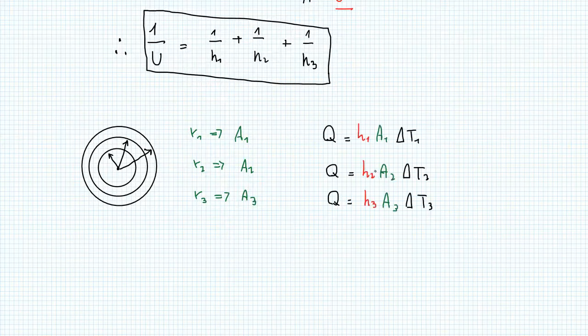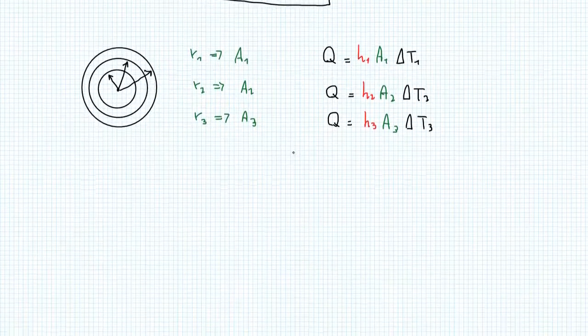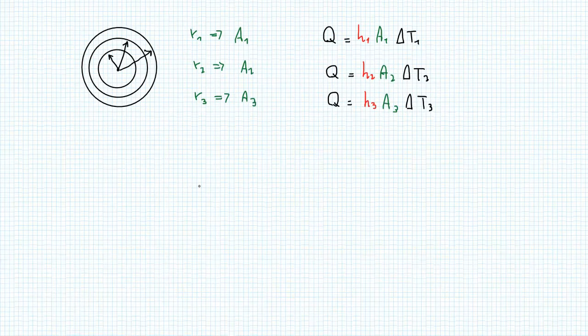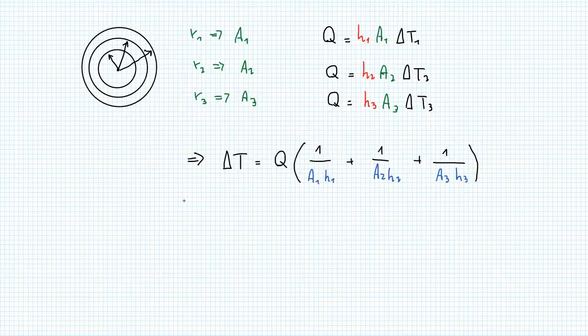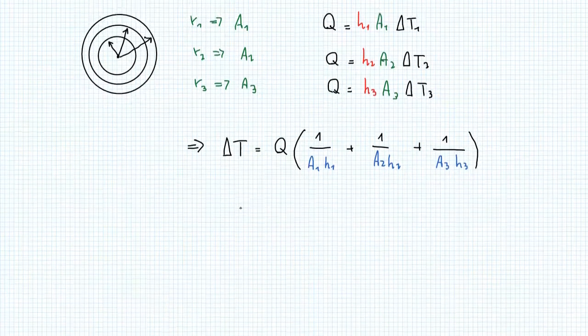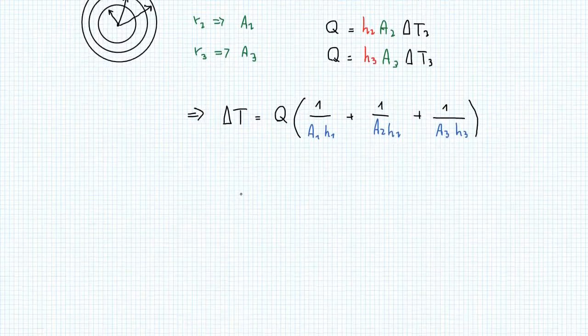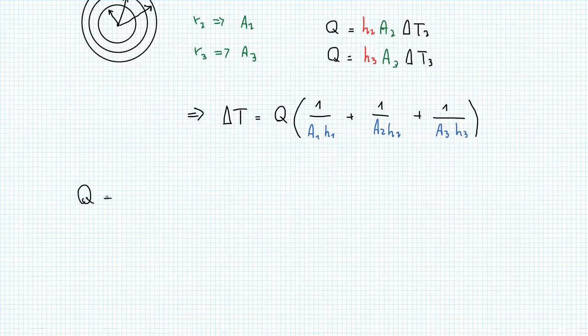Now the individual heat transfer equations will look something like this. And summing them like we did before will give us this equation, where A is no more constant but changes at every layer. And it's important to notice that in this case, the value of U will vary according to which area is used as a basis.